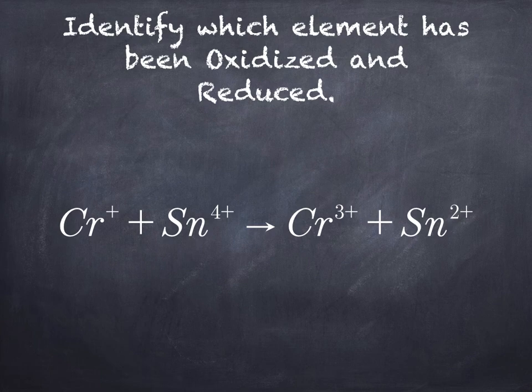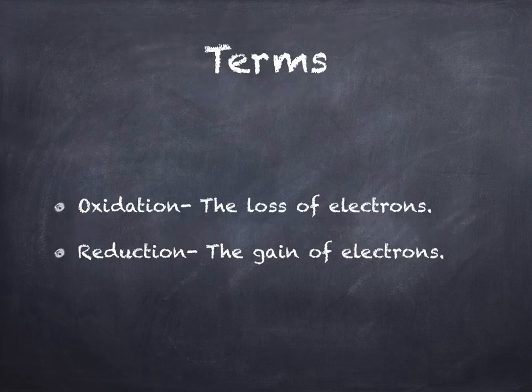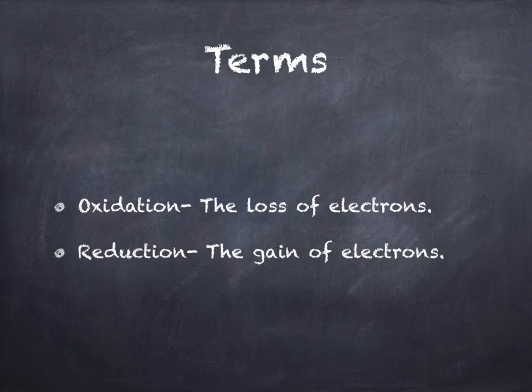So let's review our terms. Oxidation is the loss of electrons and reduction is the gain of electrons.